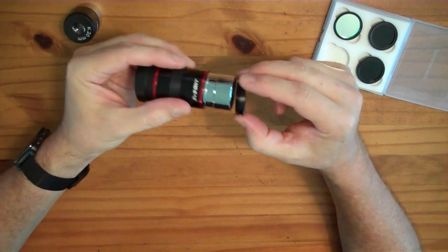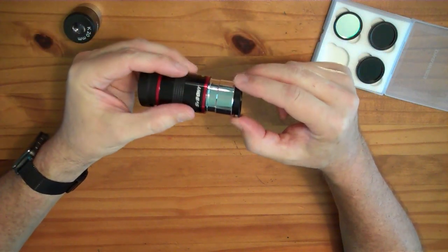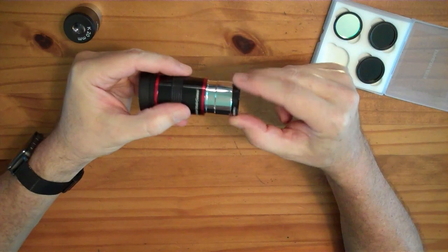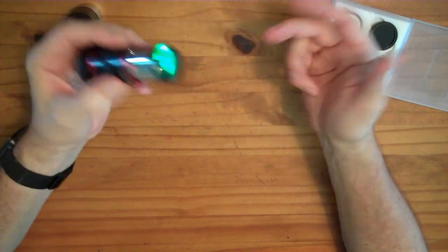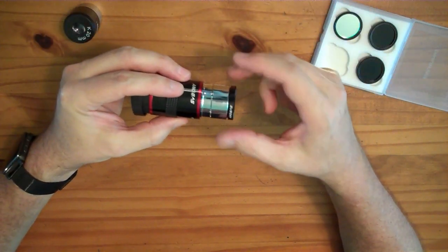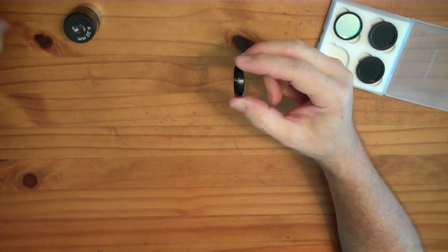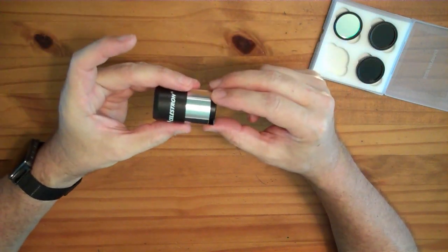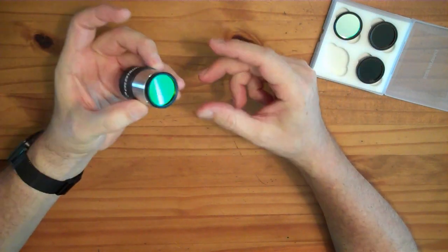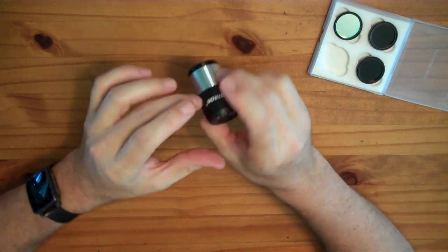So I have here an SV Boney telescope eyepiece and this fits very well into the SV Boney, which you'd expect because the same people make the filter and the eyepiece. But even like this Celestron, it's a little bit looser there, but when you screw it in it holds and screws in.